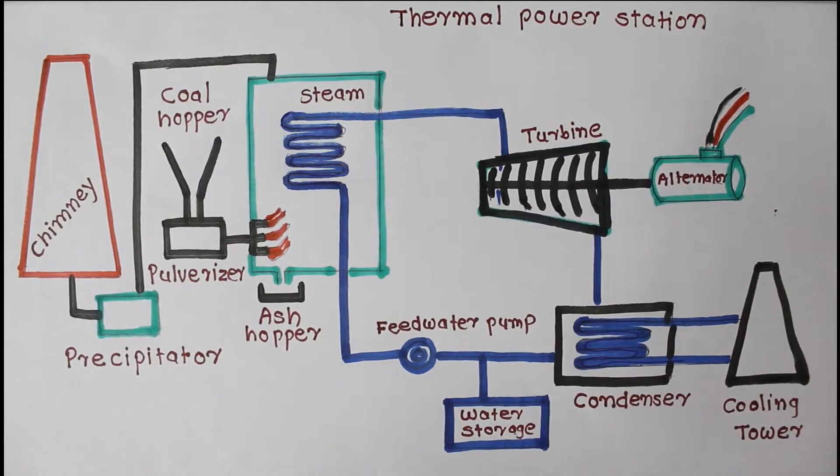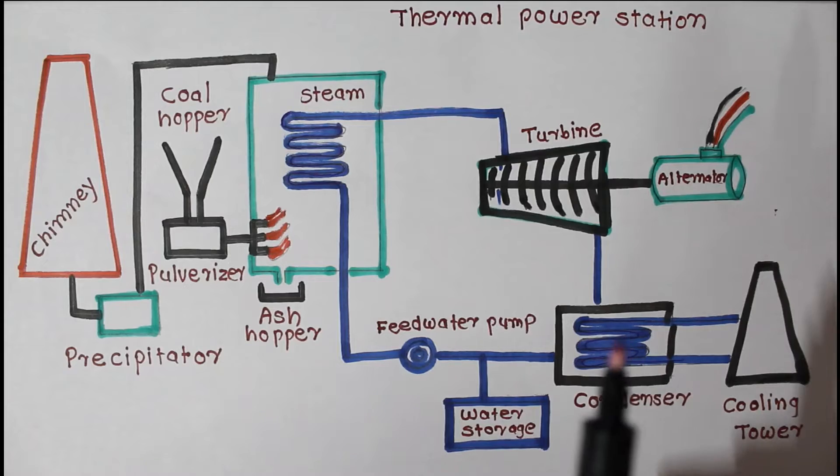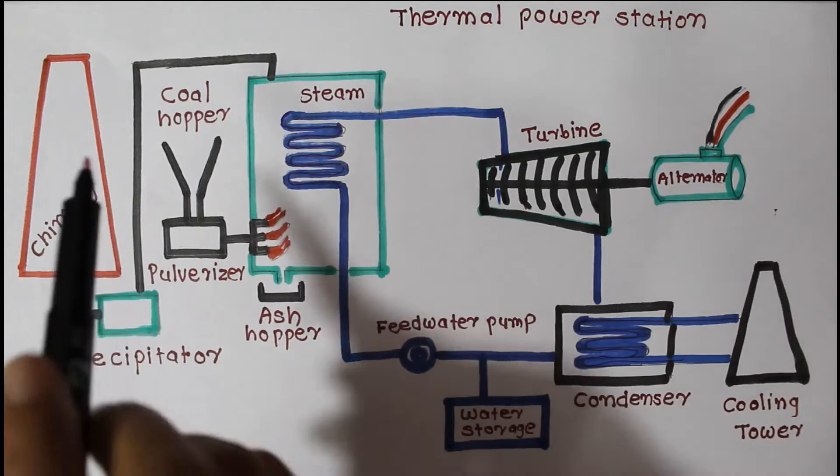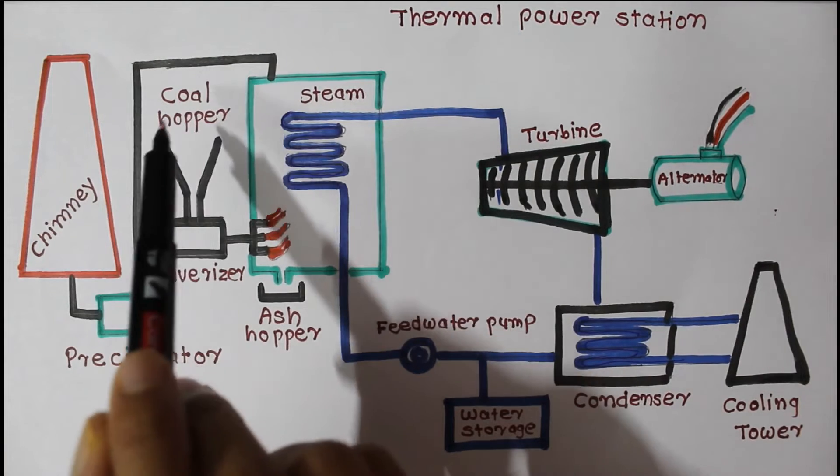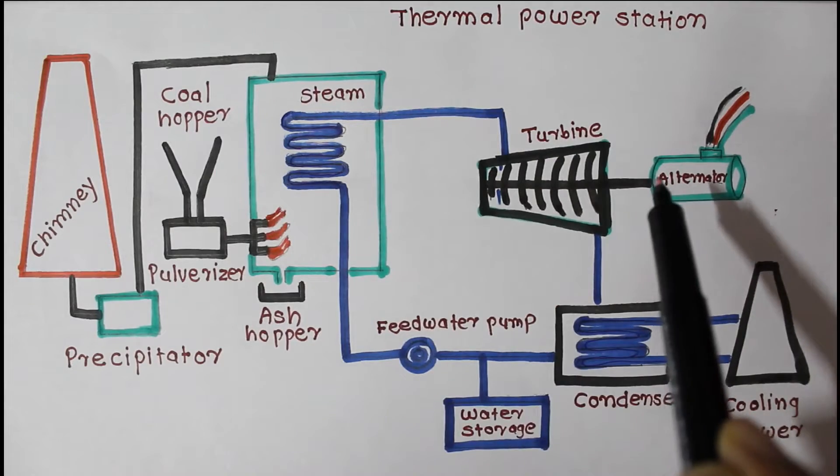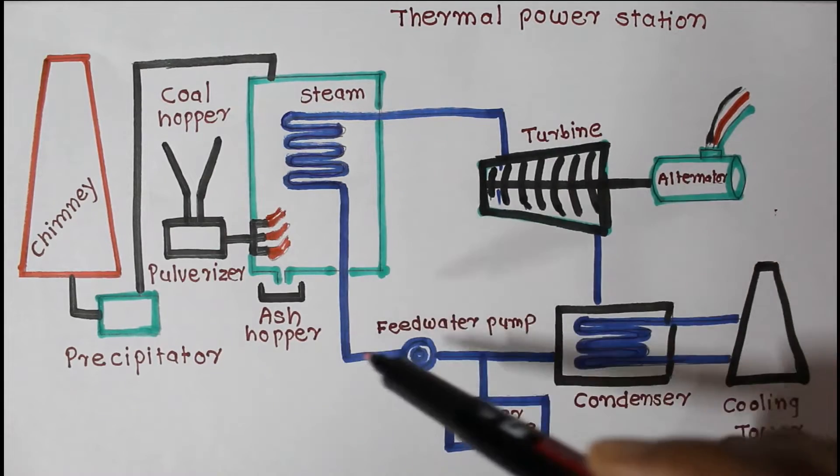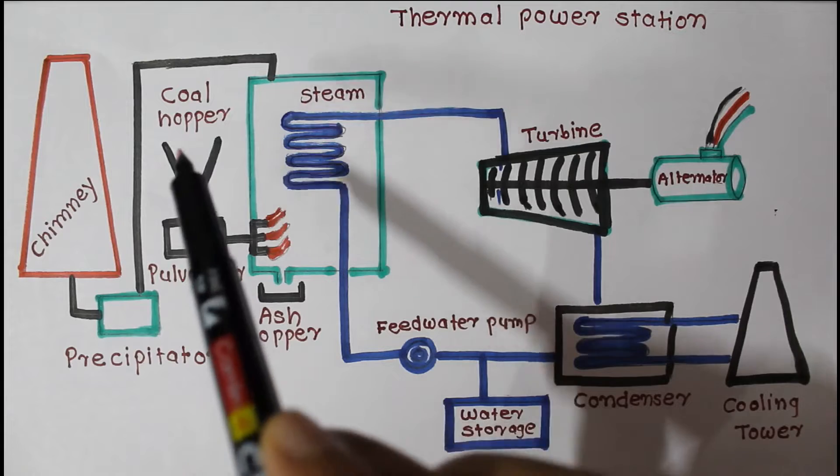What is thermal power station? A thermal power plant or station converts the heat energy of coal into electrical energy. In thermal power station, coal is used as a fuel.